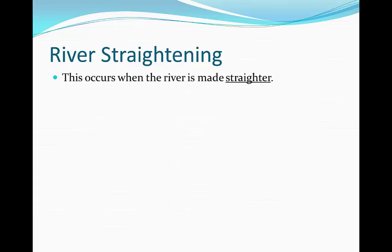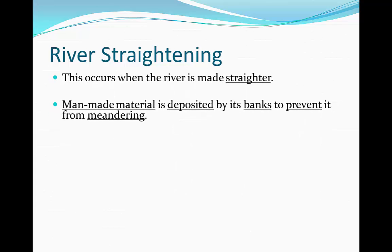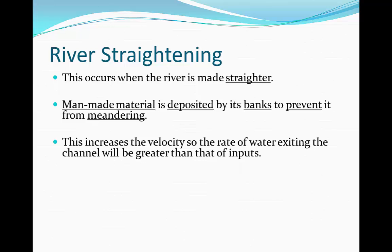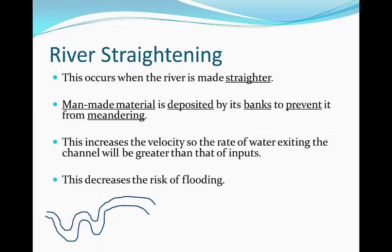River straightening occurs when the river is made straighter. Man-made material is deposited along its banks to prevent the river from meandering, so the direction of flow becomes completely straight. This increases the velocity of the river, and the rate of water exiting the channel will be greater than that of its inputs, which decreases the risk of flooding.